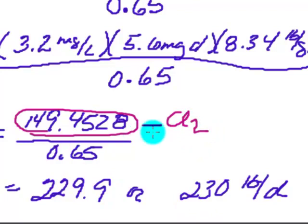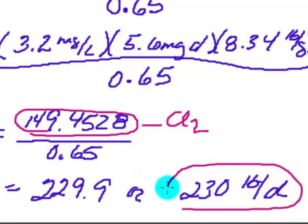And then 149 pounds per day, about 149.5, and then this is how many pounds of sodium hypochlorite I need. I'll just write that in there, NaOHCl for hypochlorite.